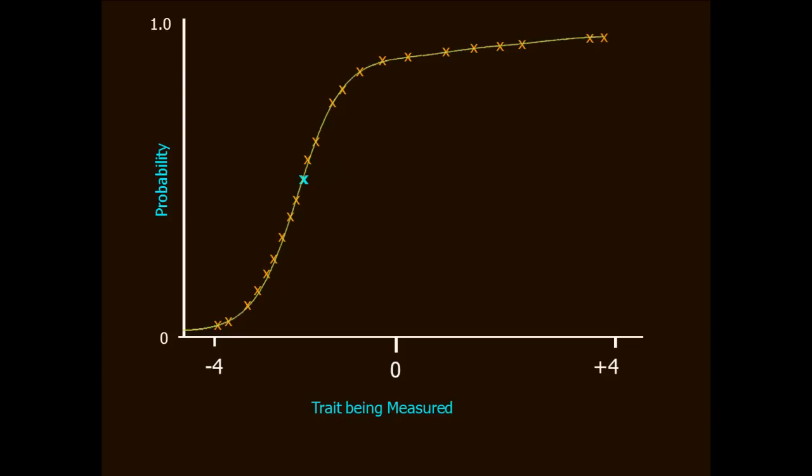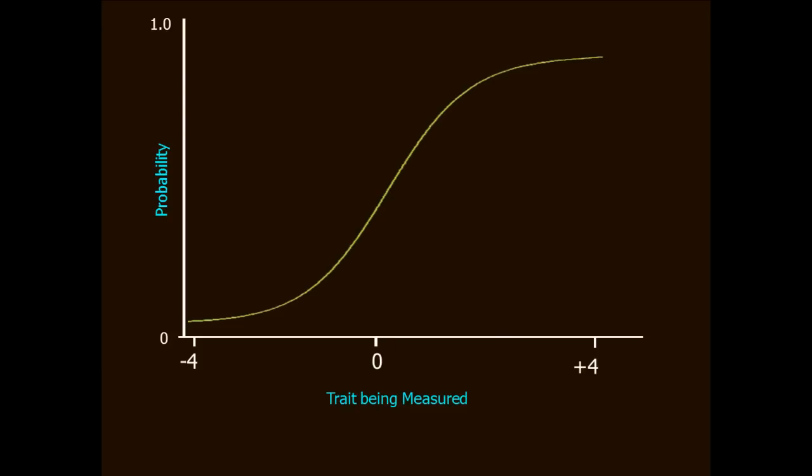Remember that IRT models, by the way, are falsifiable. So, they predict the probability, but you can go out and test to see how good that prediction is. For example, suppose this line is the best trace line that the IRT model could come up with. But this is what actual observations look like. That would tell you that this item has poor fit. It's not working very well.